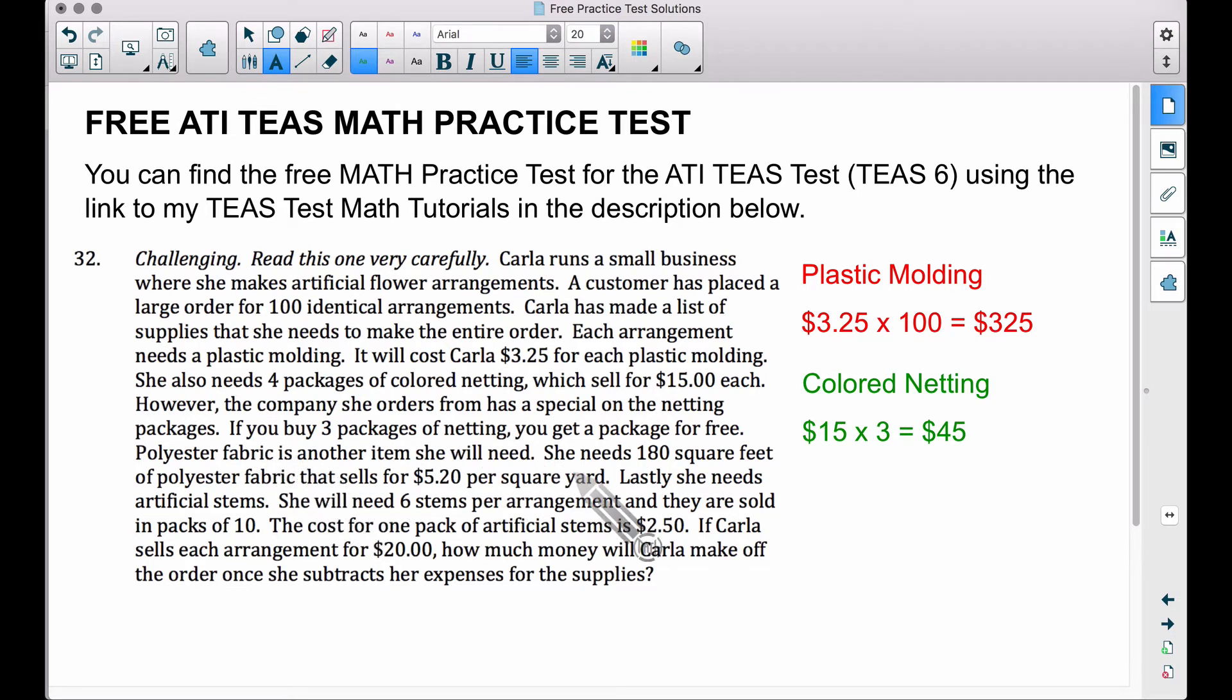Now, the polyester fabric, this is the tricky one because she needs 180 square feet of polyester fabric that sells for $5.20 per square yard. Be careful here. We got square feet, square yard. We need to make sure we get these in the same unit of measurement before we find the price.